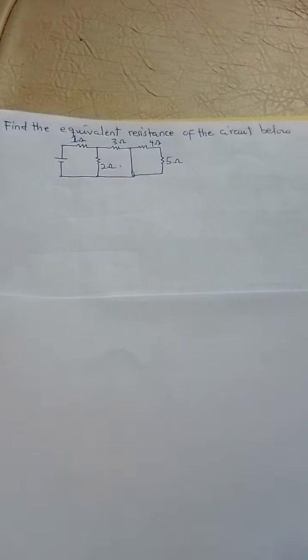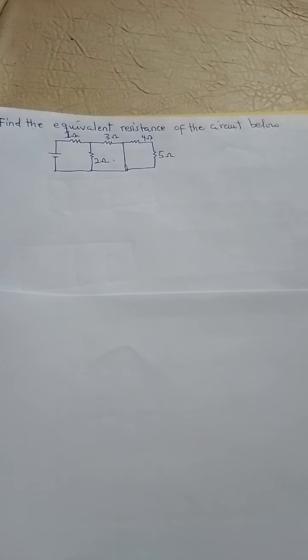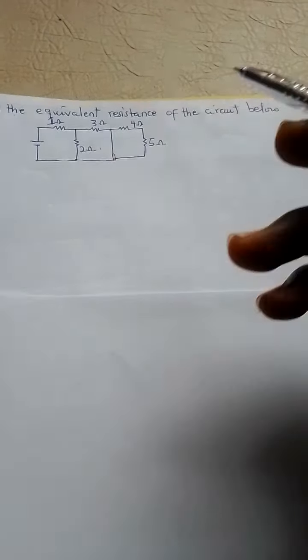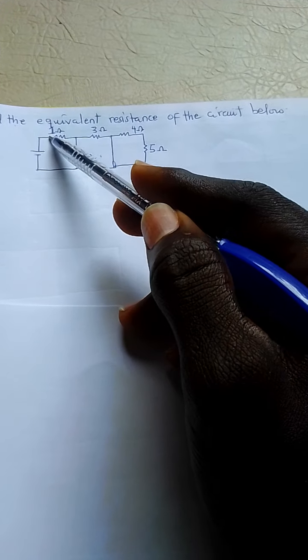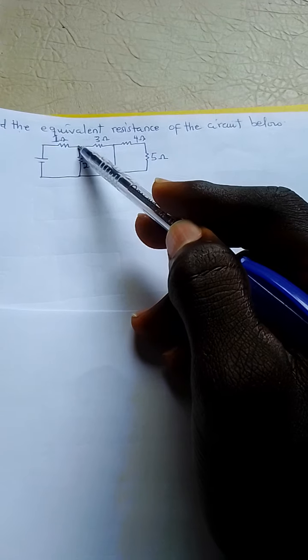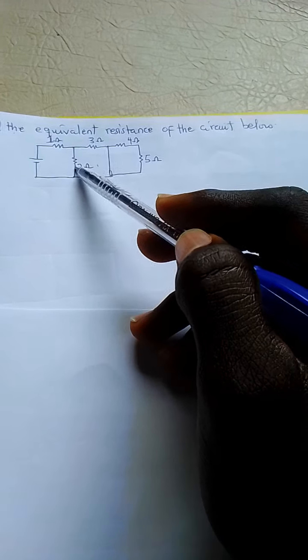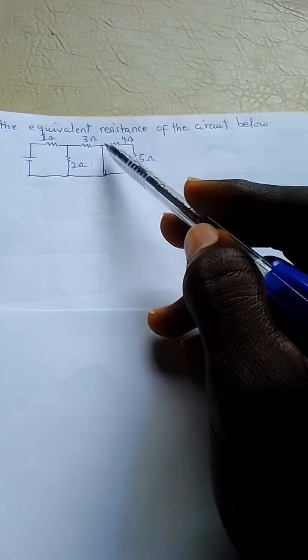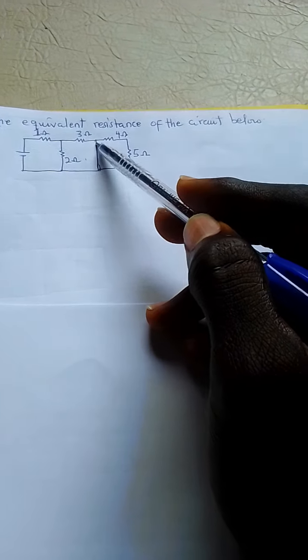Now, from application of the concept of short circuits, if you have this as a source, current will flow through this 1 ohm resistor. Upon reaching this junction it will split, so some will pass here, some will also pass here.